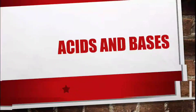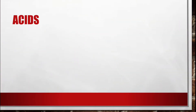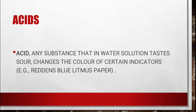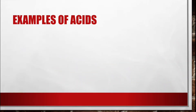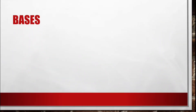Acids and bases. An acid is any substance that in water solution tastes sour and changes the color of certain indicators — for example, turns blue litmus paper red. Some examples of acids: lemon has citric acid, milk has lactic acid, and vinegar has acetic acid.